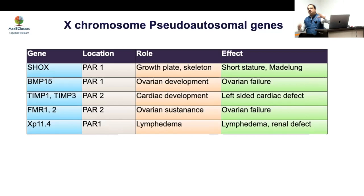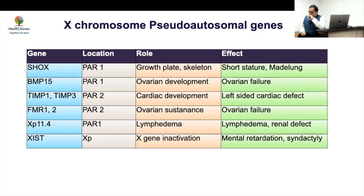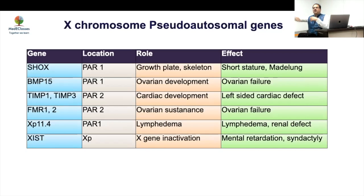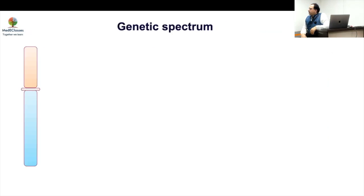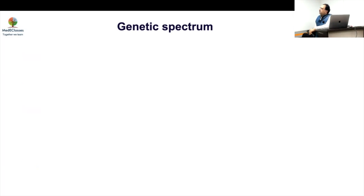This framework makes it easier to understand Turner syndrome rather than just listing all the manifestations. The XIST gene causes inactivation; if inactivation fails, you will have a double dose of many sex chromosome genes, leading to mental developmental issues, syndactyly, and other abnormalities. The genetic spectrum: the intact X paired with a completely absent second chromosome is the classical Turner syndrome with the most severe manifestations.